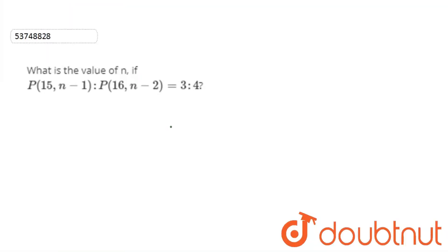Hello! Today, I have asked what is the value of n if permutation of 15 comma n-1 divided by permutation of 16 comma n-2 is equal to 3 by 4.